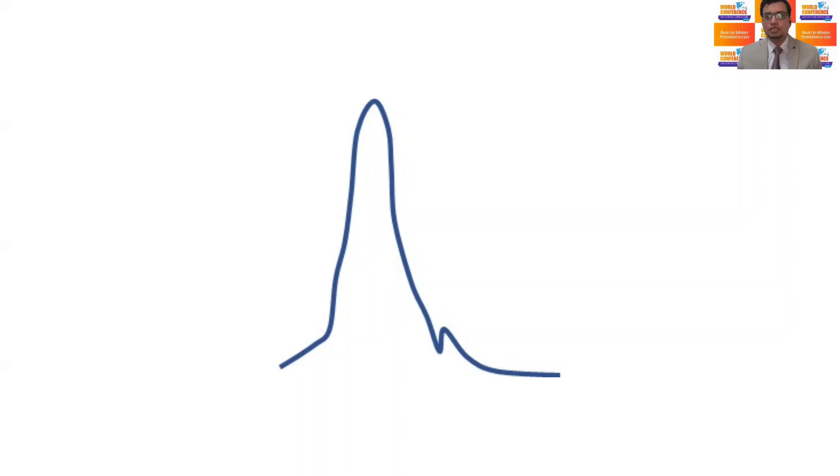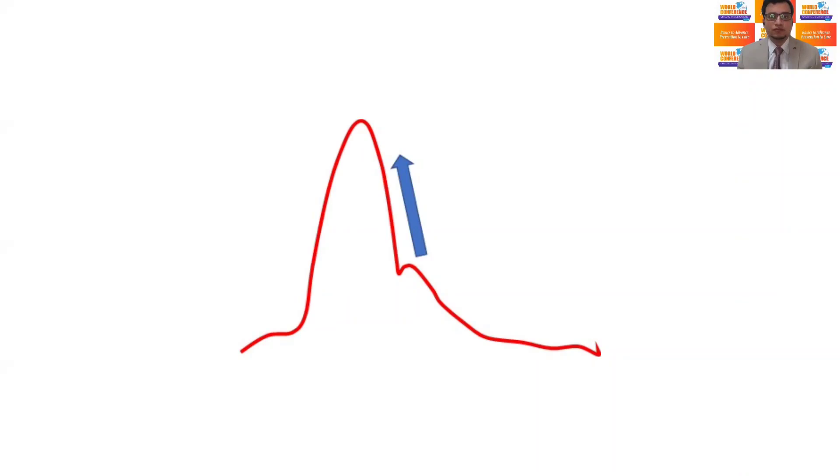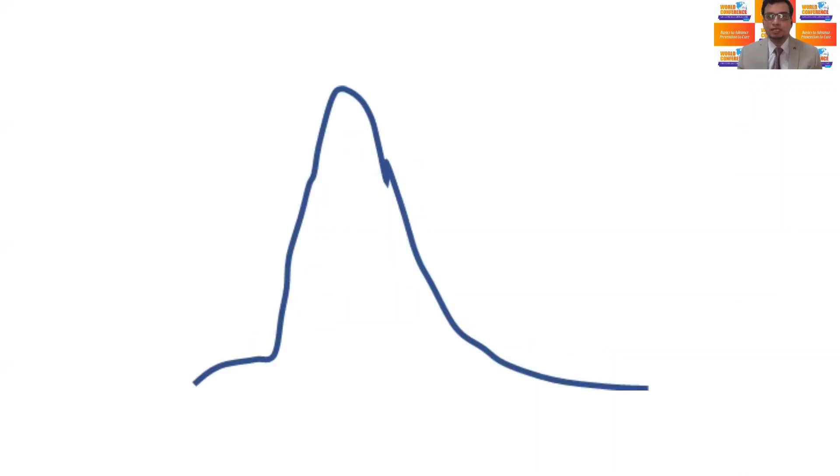the dicrotic notch will move away further and sometimes merge with the baseline. However, if the patient is vasoconstricted, in cases of severe hypertension, the dicrotic notch will be high up in the trace almost near to peak.